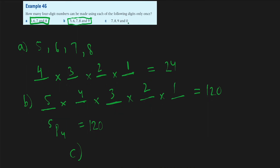For the third part we have the digits 7, 8, 9, and 0. This is similar to the first part except there is a zero, and zero cannot be the first digit because then the number would only be a three-digit number, not a four-digit number. So for the first digit we only have three options. For the second digit, since we can now use zero, we have three options again. Then two options, then one. This gives 3 times 3 times 2 times 1, which is 18.